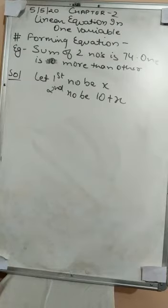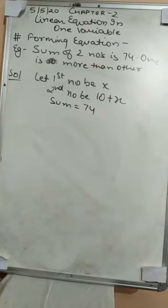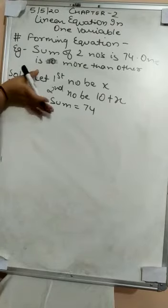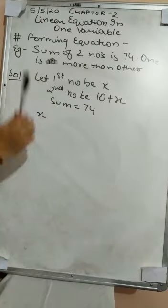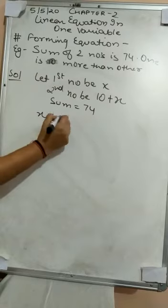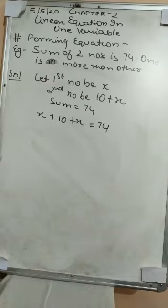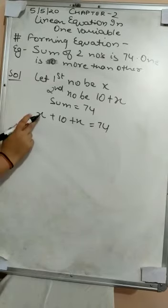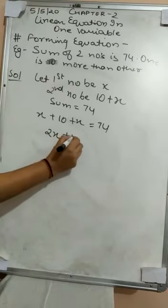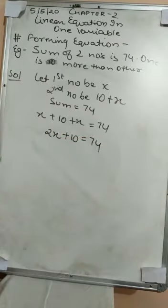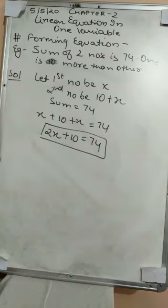And the sum we already know — the sum given is 74. Now we can make the equation. We have all three parts: the first number is x, the second number is x plus 10, and the sum is 74. So the equation will be x plus x plus 10 equals to 74, which gives us 2x plus 10 equals to 74. This is the equation required from this question.